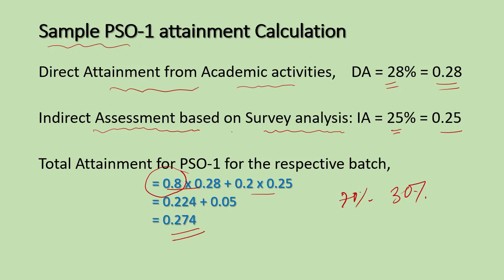The total attainment for PSO1 comes out to be 0.274 or 27.4%. Such calculations need to be carried out for all POs and PSOs. Targets have to be set for the program based on enrollment quality, institute infrastructure, and past history. Setting high and unreasonable targets is not encouraged; achievable and realistic targets with continuous improvement are more important.